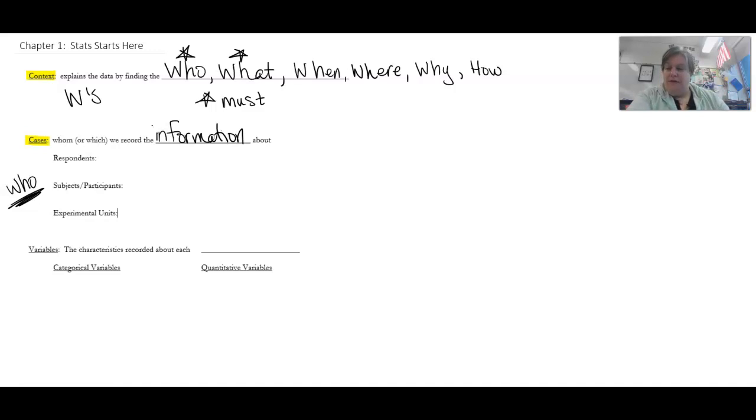Okay, so there's three different types. The first one is a respondent. Respondents are people. So if people do a survey, they are called respondents. And we should say this is for surveys only.